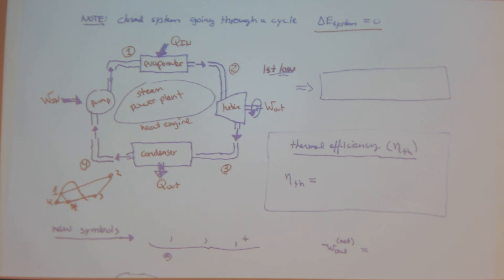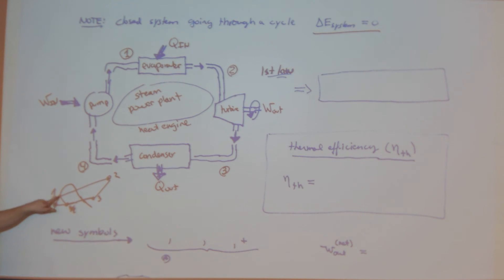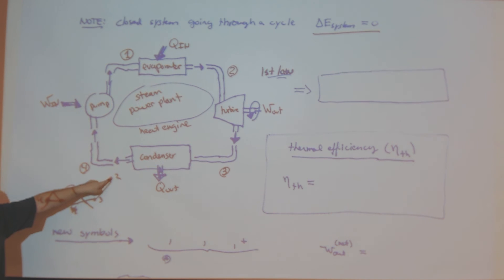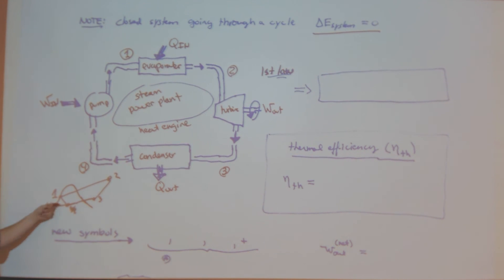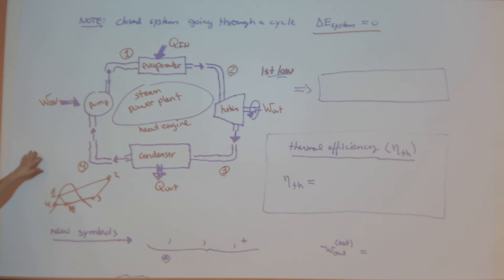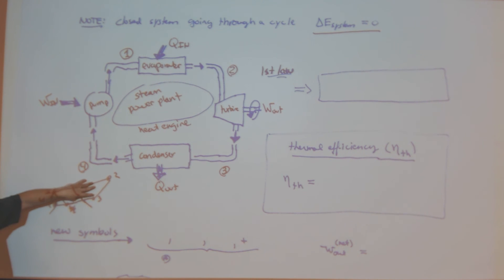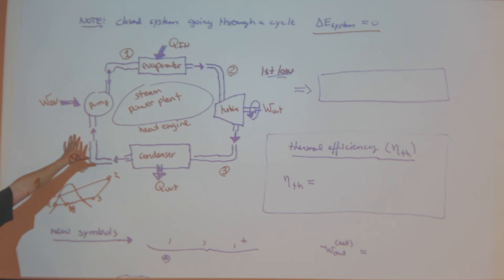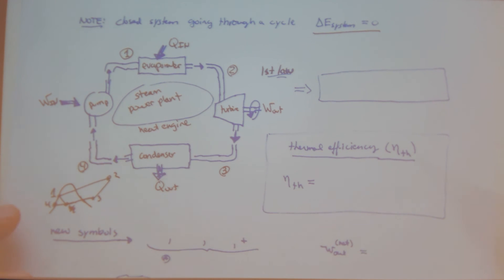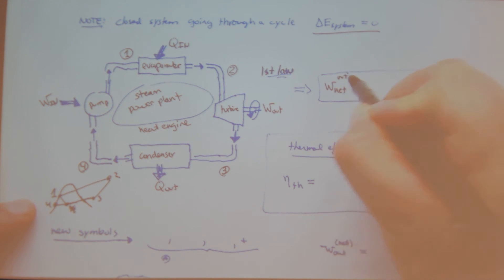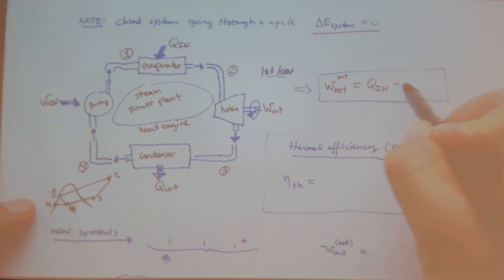I evaporate it to make steam with a lot of energy, then get work output. On this diagram I can draw Q_in, W_out, Q_out, and W_in. On the PV diagram, the enclosed clockwise area represents net work out. So for the steam power plant, by the first law: W_net,out equals Q_in minus Q_out.